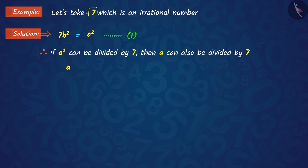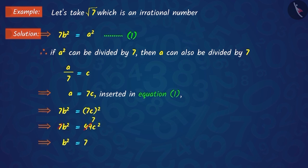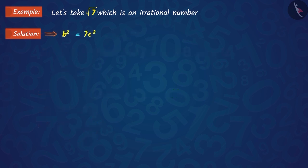Suppose, when we divide A by 7, we get C as a quotient, where C is an integer. Putting the value of A in equation 1 and solving, we get B² equals 7C². This shows that 7 divides B². Then, 7 will also divide B.